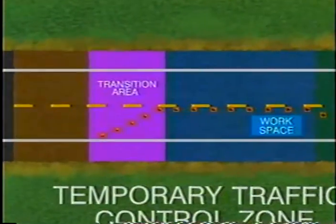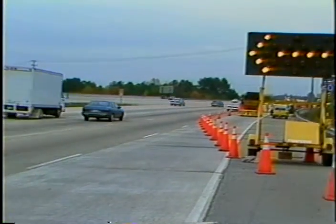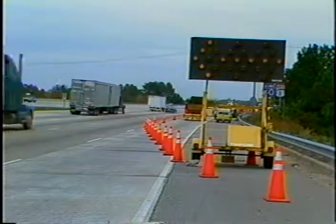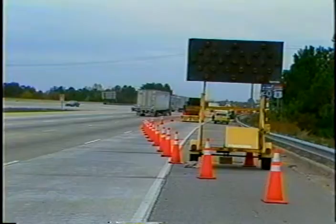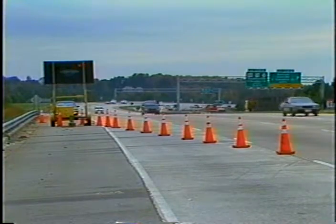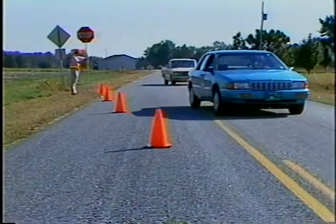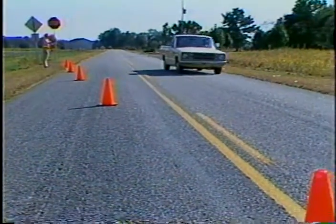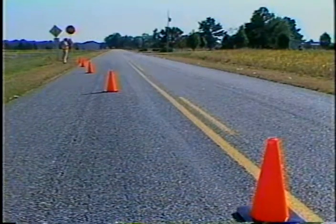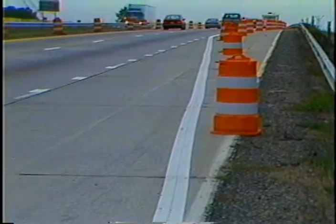Next is the transition area. When work is performed within one or more traveled lanes, a lane closure is generally required. In the transition area, traffic is channeled from the normal highway lanes to a new path, which is required to move traffic around the activity area. Most often, this is accomplished with tapers to close the lanes. The transition area should be obvious to drivers. The correct path should be clearly marked with channelizing devices so that drivers will not make a mistake and follow the old path. If the existing pavement markings create confusion, interim markings should be used.